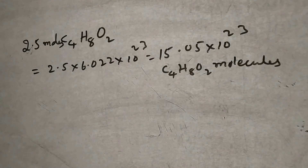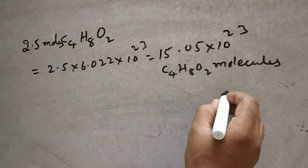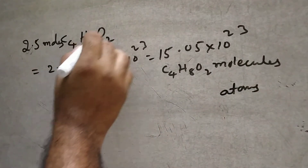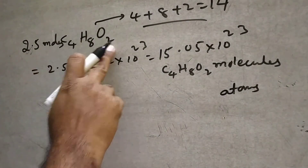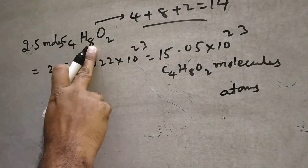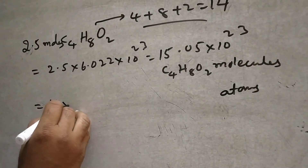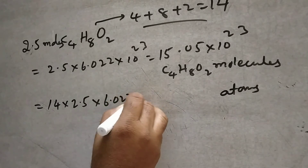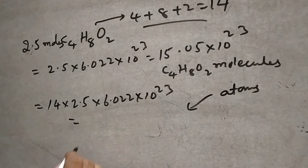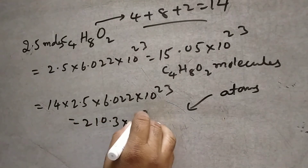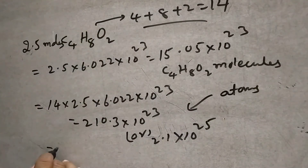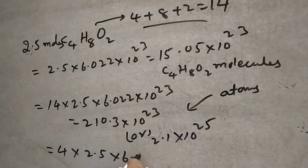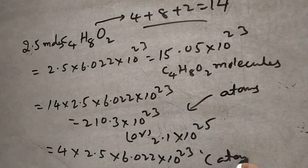Next, how many total atoms are present? Atoms means it contains 4 carbon + 8 hydrogen + 2 oxygen, that is a total of 14 atoms per molecule. So: 14 into 2.5 into 6.022 into 10 to the power of 23 gives 210.3 into 10 to the power of 23, or 2.1 into 10 to the power of 25 atoms. If you want only carbon atoms: 4 into 2.5 into 6.022 into 10 to the power of 23.